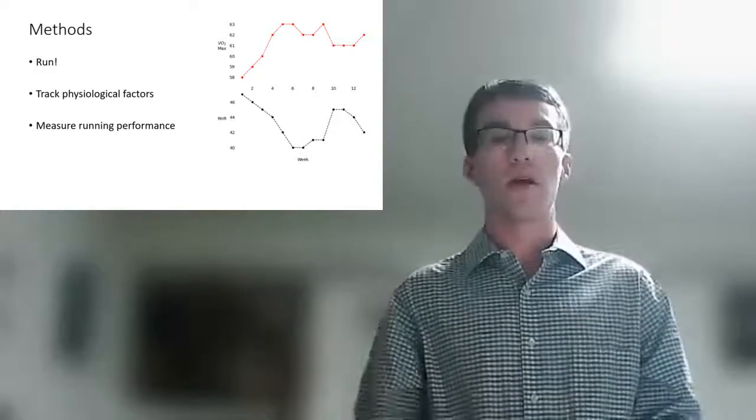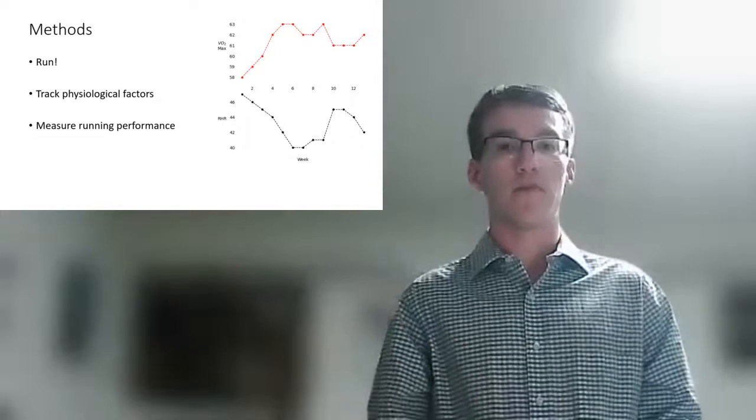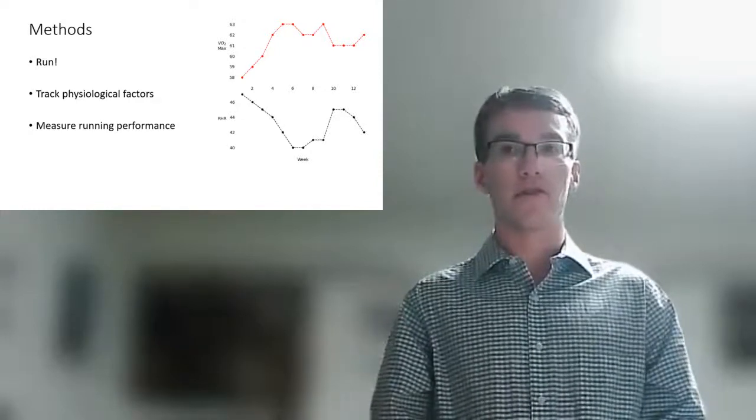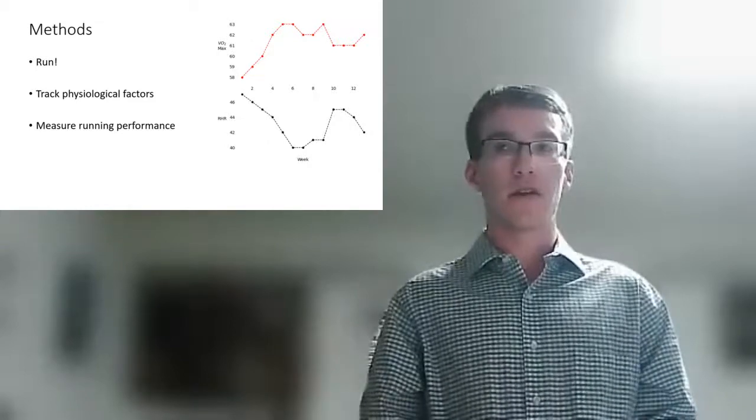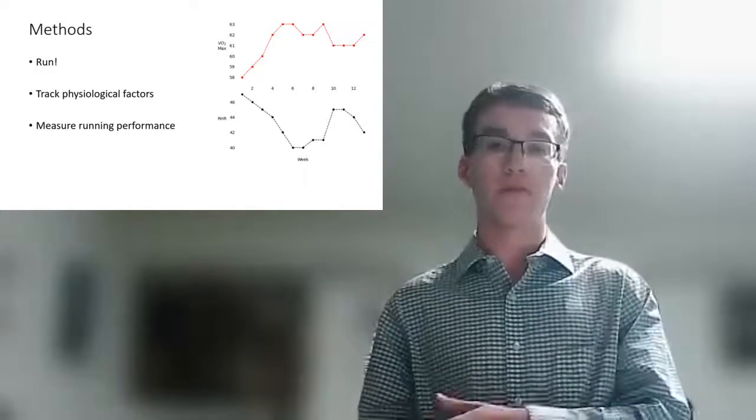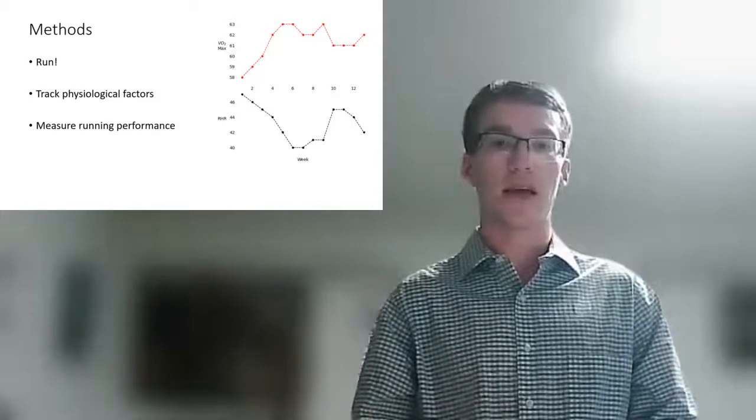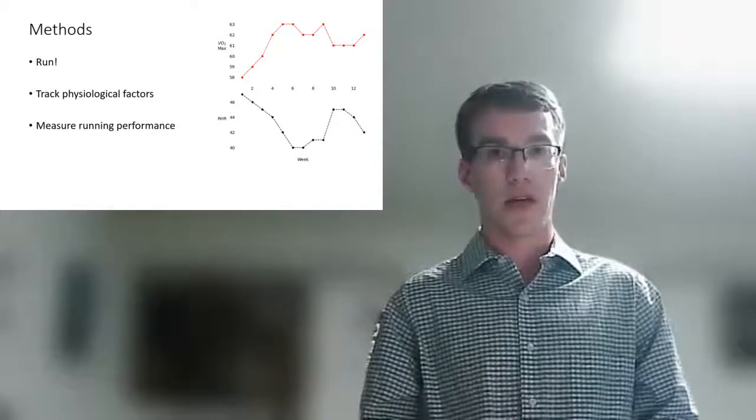You can see on this chart here to the right that over the summer, my VO2 max increased and my resting heart rate decreased pretty consistently until about the halfway point in the summer. And then there was a bit of fluctuation in the second half of the training period, which I'll get to in my discussion section.